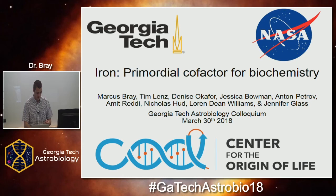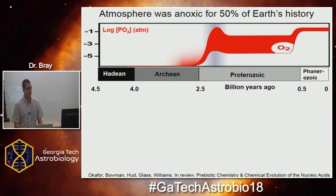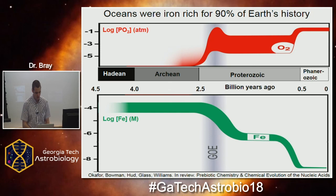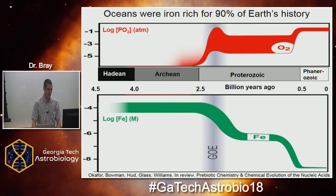Life originated and evolved on a very different Earth than the one we know today. It was totally anoxic for at least half of Earth's history, with oxygen approaching modern levels only about half a billion years ago. This allowed for the buildup and persistence of a very high amount of ferrous iron relative to today.